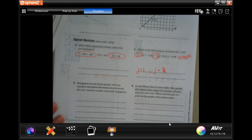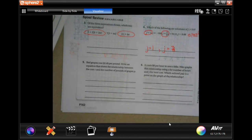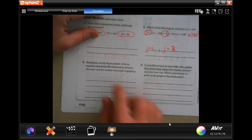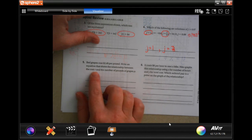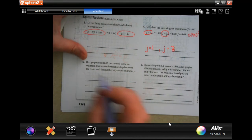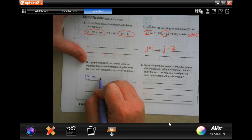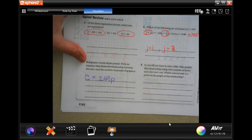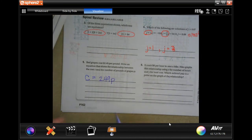Red grapes cost two dollars and 49 cents per pound. Write an equation that shows the relationship between the cost and the number of pounds of grapes. So the cost equals two dollars and 49 cents per pound, that's it y'all. Put a dollar sign there, it doesn't hurt anything.